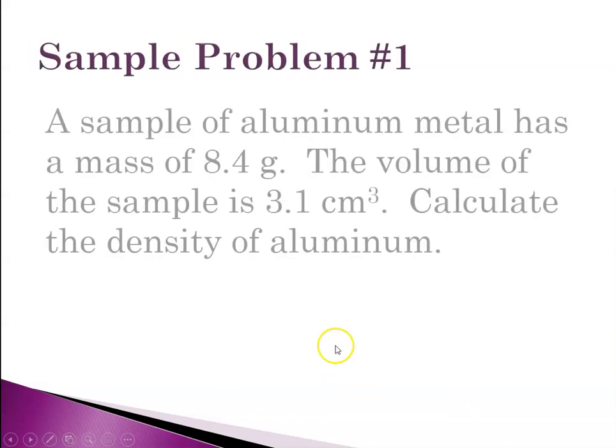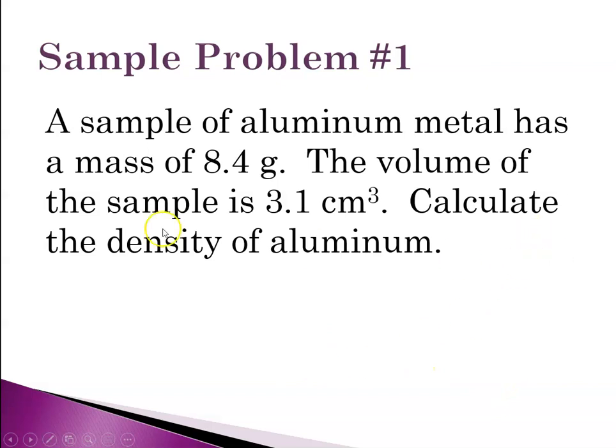So let's solve a sample density problem. A sample of aluminum metal has a mass of 8.4 grams. The volume of the sample is 3.1 centimeters cubed. Calculate the density of aluminum.